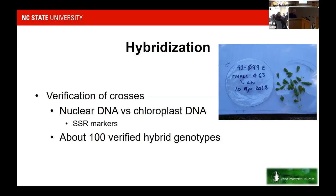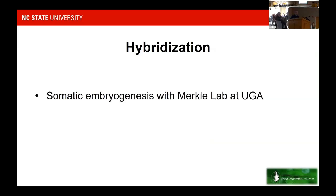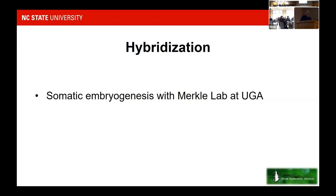Because hybridization produces a small number of genotypes and would potentially be used for ornamental-type plantings where genetic diversity is less critical, they worked with the Merkel Lab at the University of Georgia to develop somatic embryogenesis techniques for these hybrid hemlocks. This could be used both for testing hybrids for adelgid resistance and, if selections were released, as a propagation method for producing cultivars.